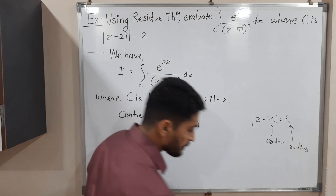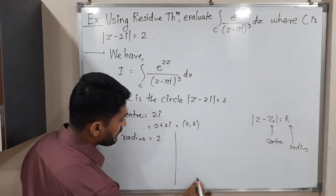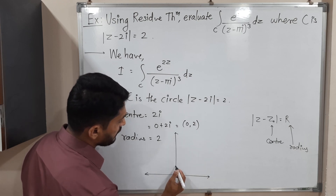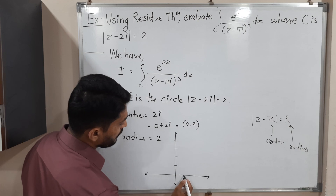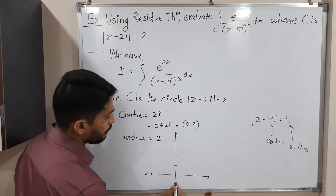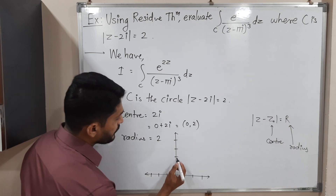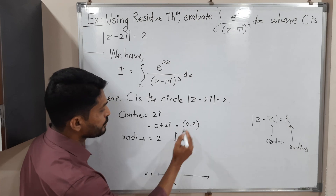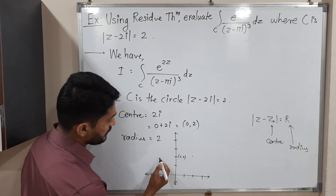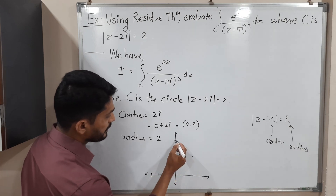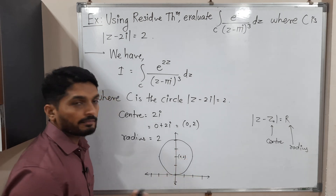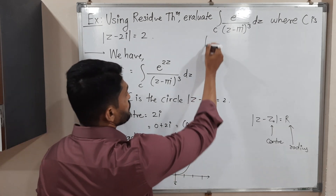Let us draw the circle. We have the imaginary axis and real axis with some scaling. The center is at (0, 2) and radius is 2, so the circle passes through four key points — extending 2 units in each direction from the center. Let us draw the rough sketch of this circle.